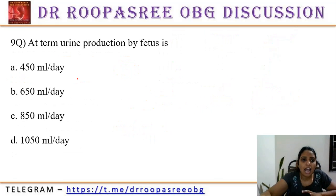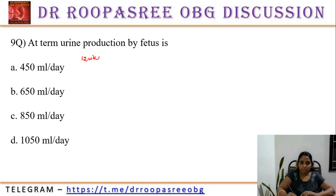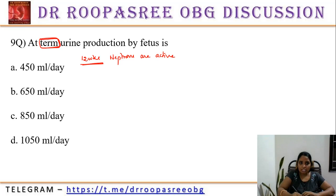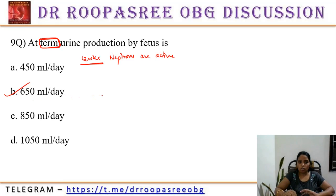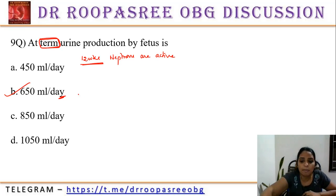At term, fetal urine production: by 12 weeks, nephrons are active. By term, the fetus produces about 650 ml per day. Less than 400 ml per day indicates oliguria, leading to oligohydramnios, meaning the renal condition is not proper. The minimum amount should be almost 650 ml per day.